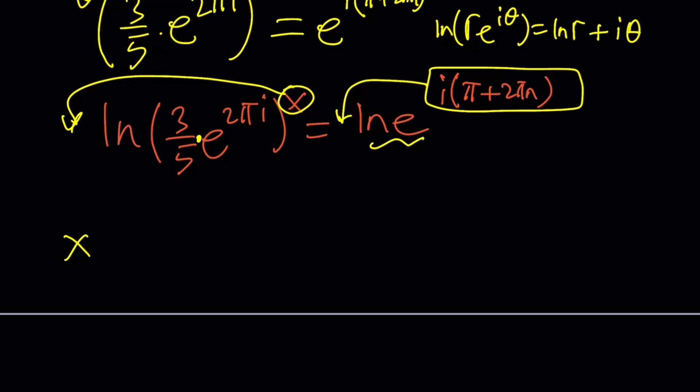So, bring the x to the front and then write this as a sum of two logs: ln 3 over 5 plus ln this, which is 2 pi i. And that equals i times, you can write this as pi times 2n plus 1. So, 2n plus 1 times pi, or i pi and then multiply by 2n plus 1, which indicates odd multiples of pi.